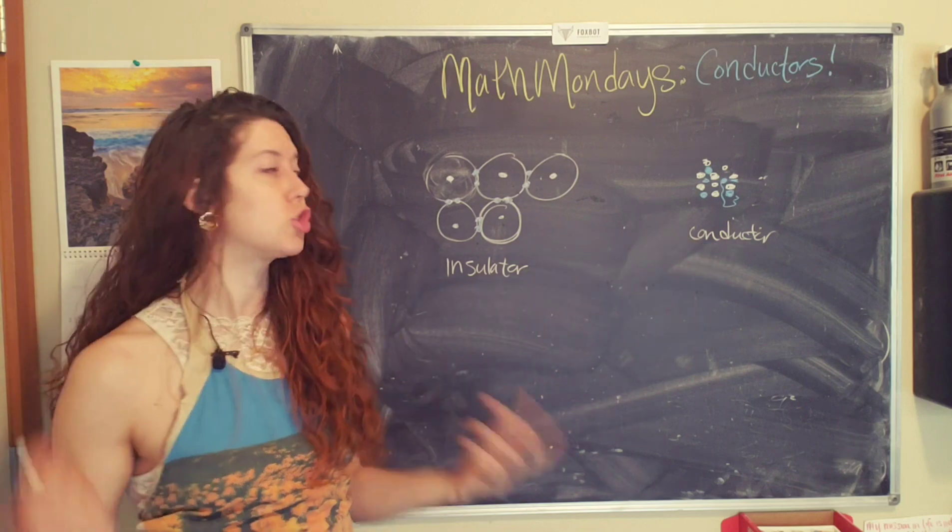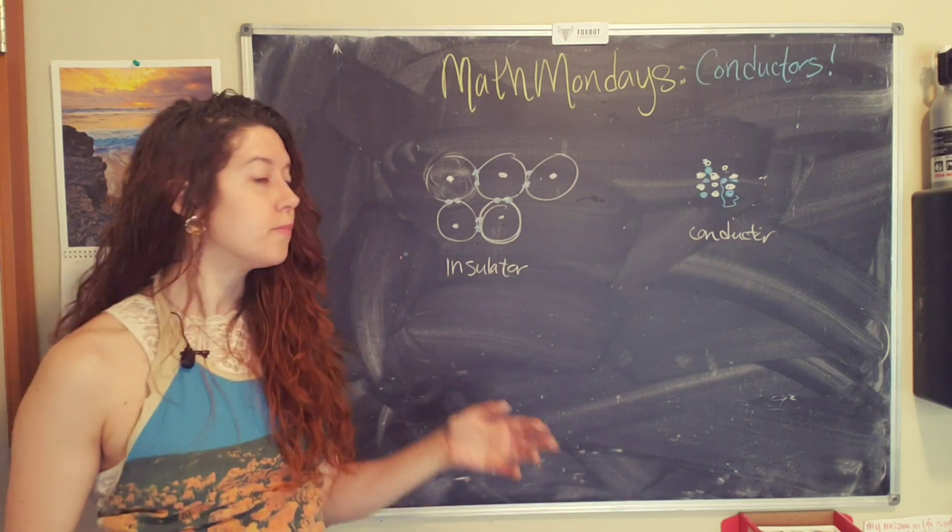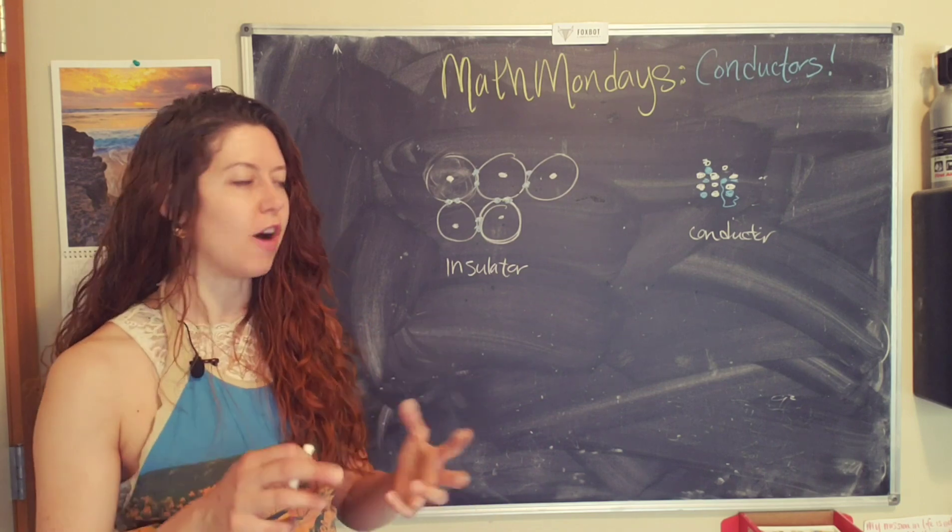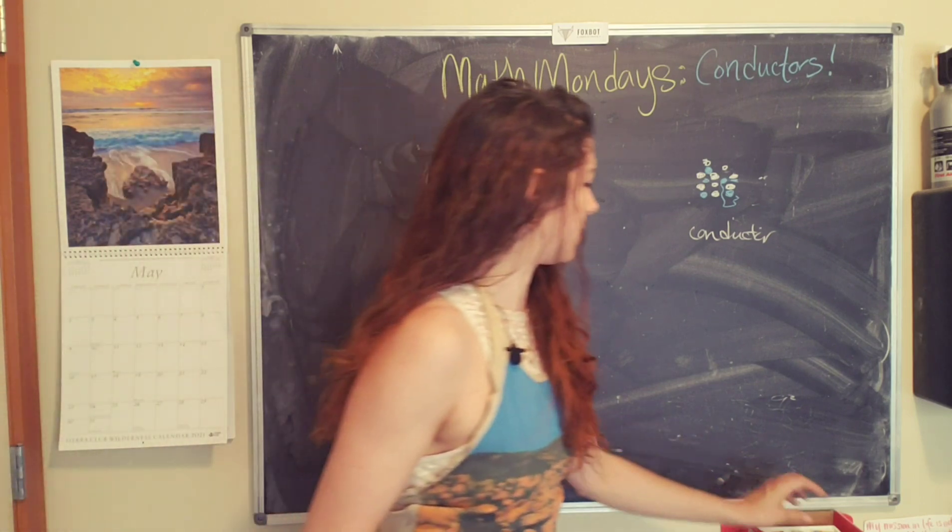So conductors have free charges. They can roam about insulators. The electrons are pretty much confined to a limited space.